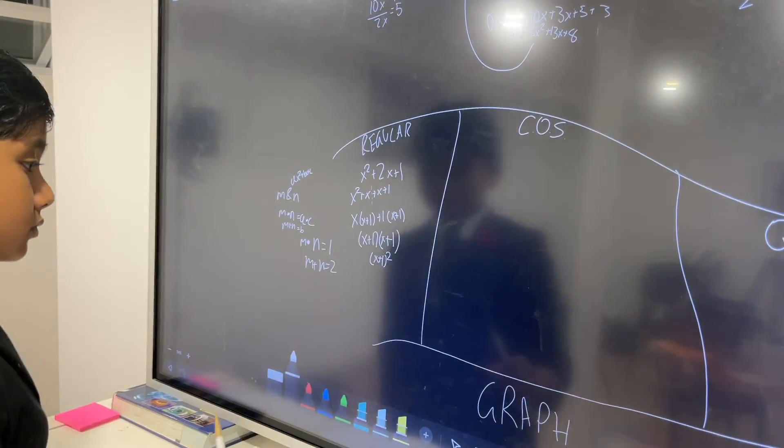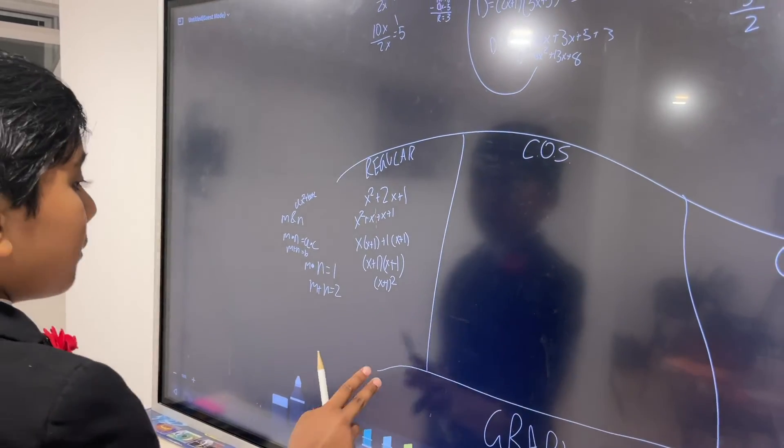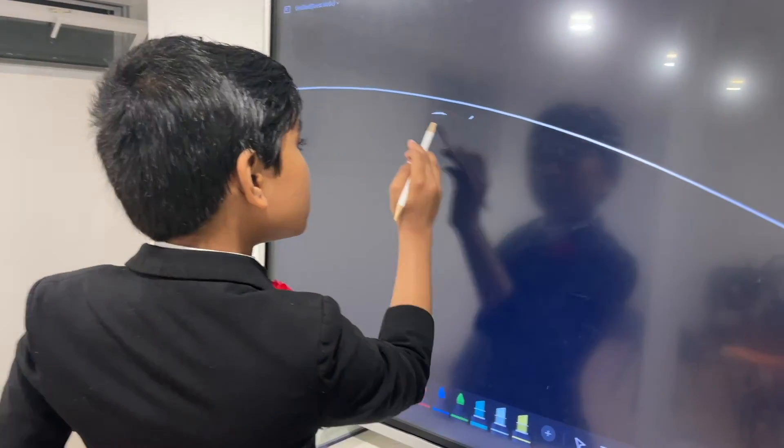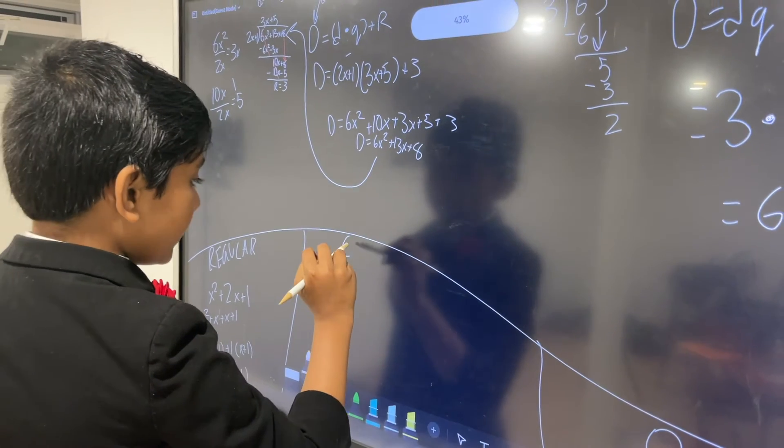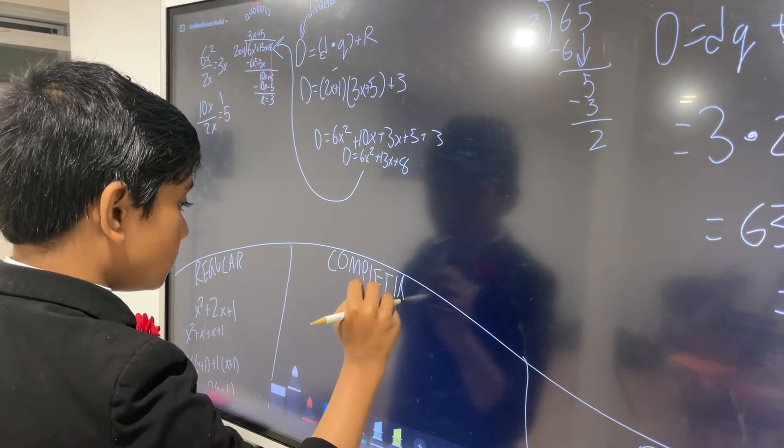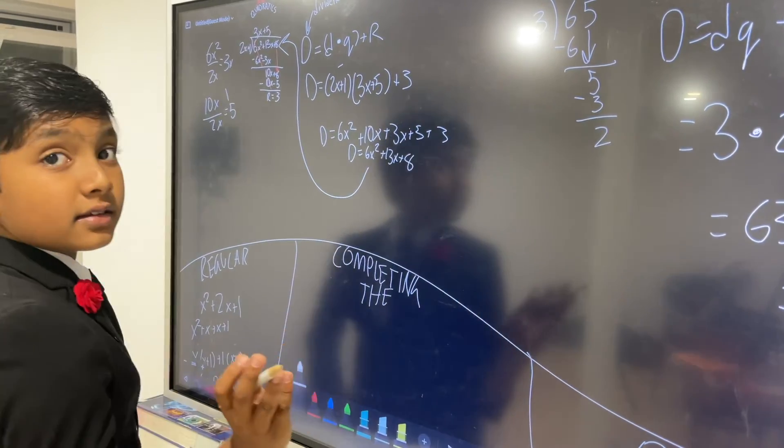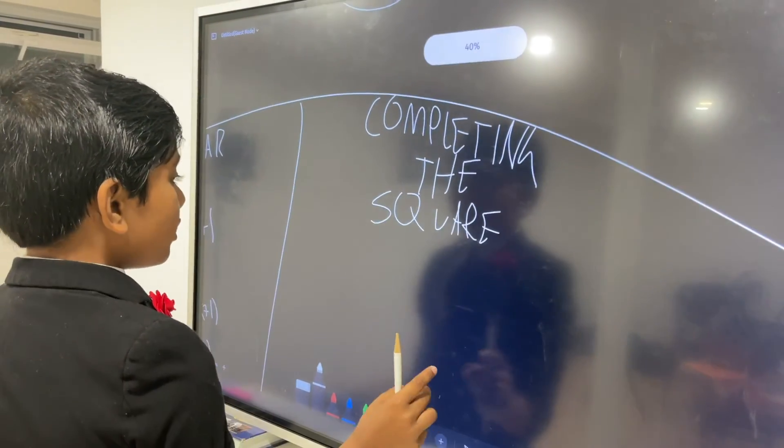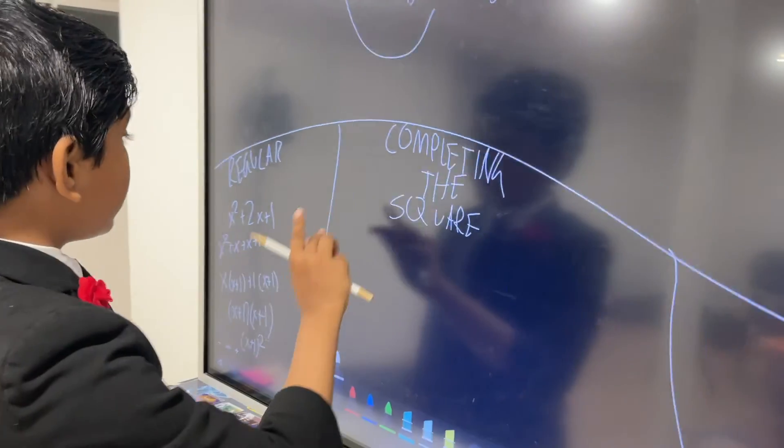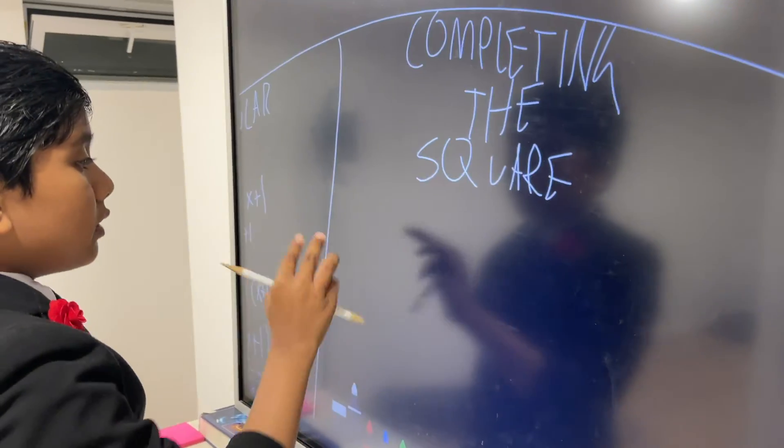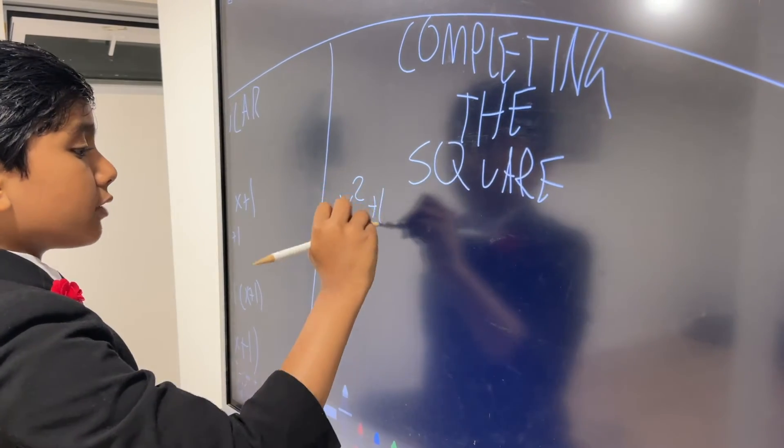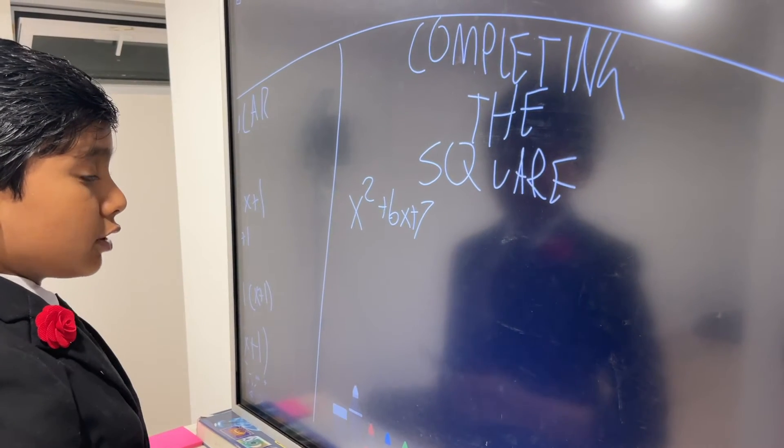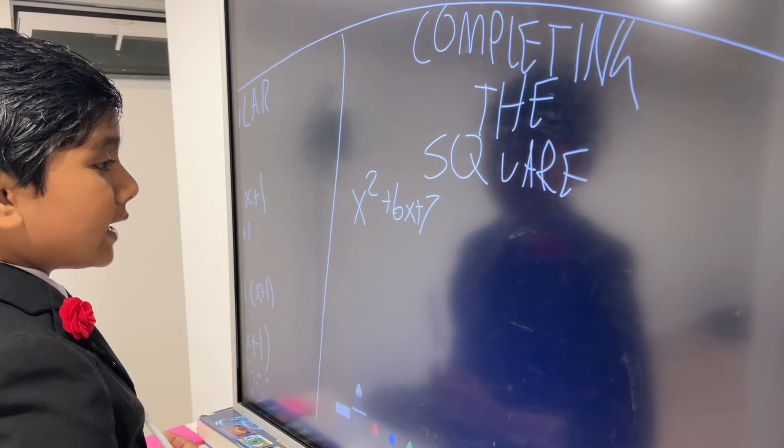We're going to see what the difference is between that and that later. So now, what about COS? Well, I'll tell you what that really is. That's called completing the what? The square. So how do we do that? Well, completing the square can do more tasks than regular. For example, if we wanted to factor out x squared plus 6x plus 7, what happens if we try and factor it out regularly? Is there anything that multiplies to 6 and adds to 7?